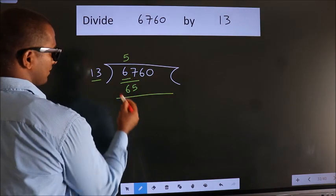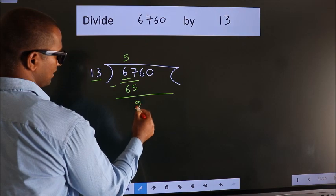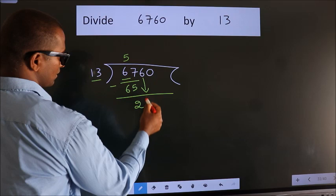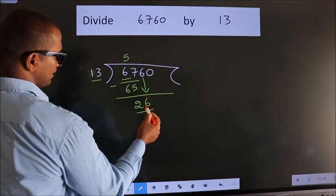Now we should subtract. We get 2. After this, bring down the beside number. 6 down. So, 26.